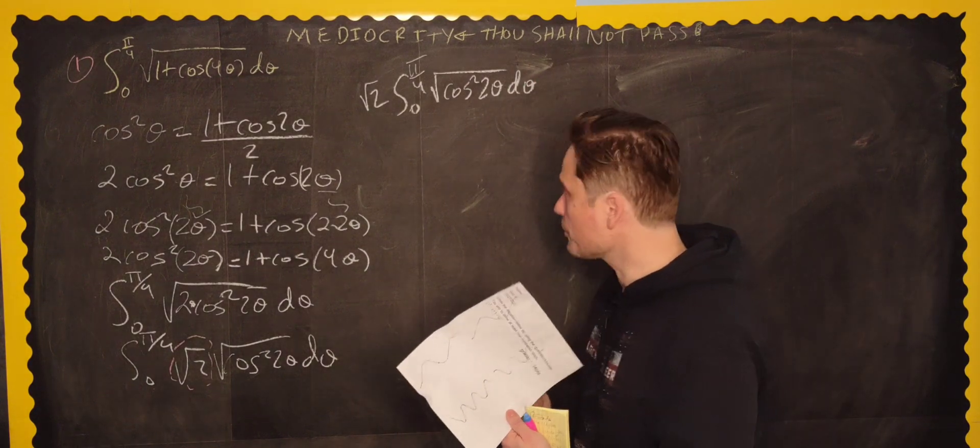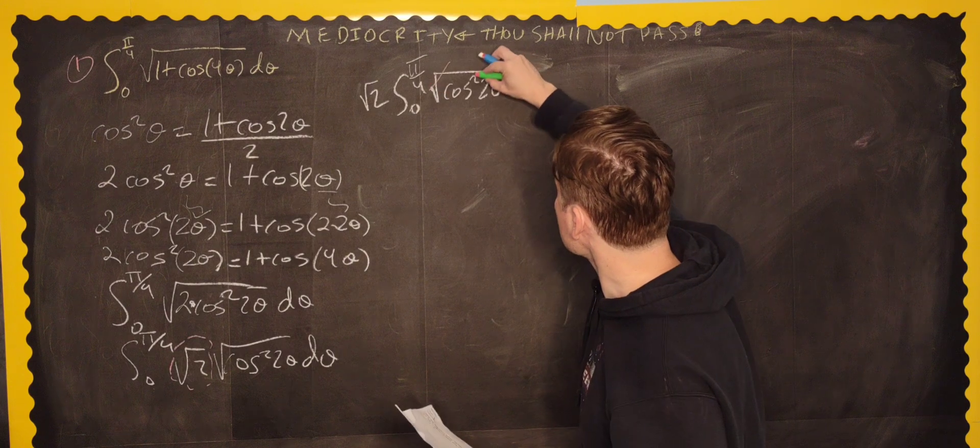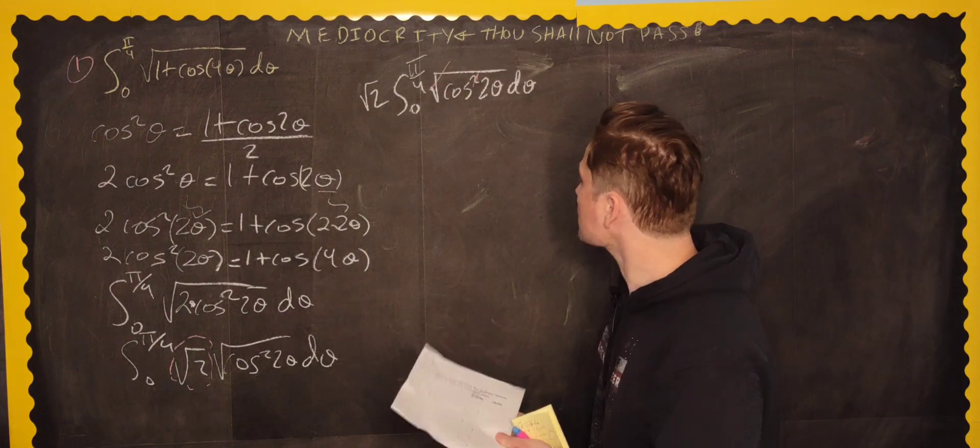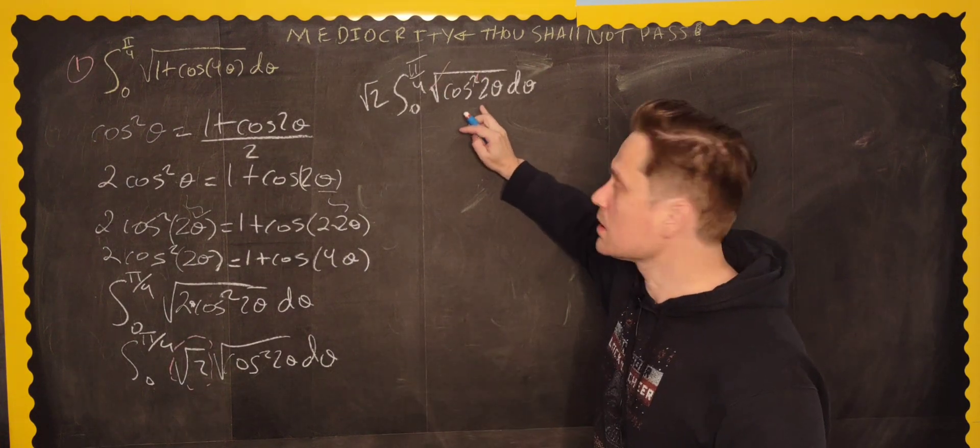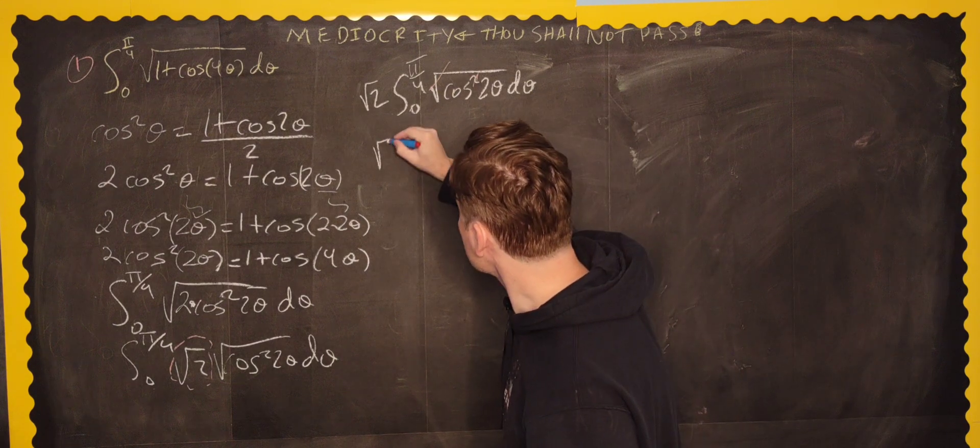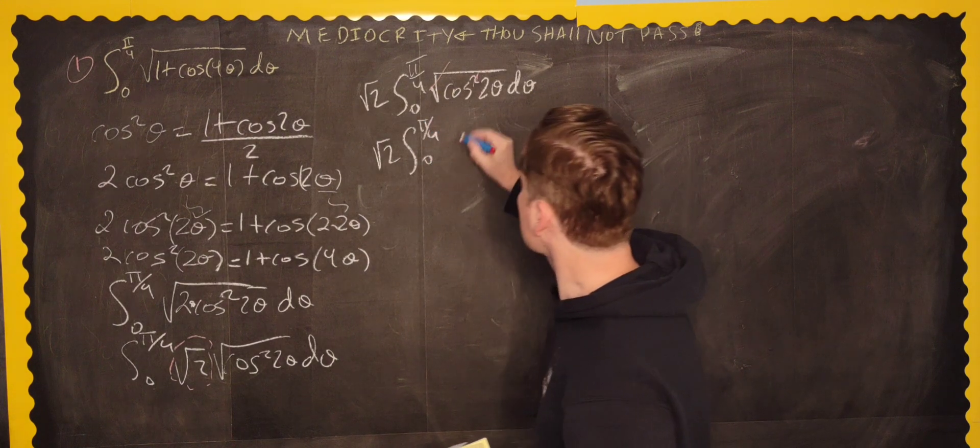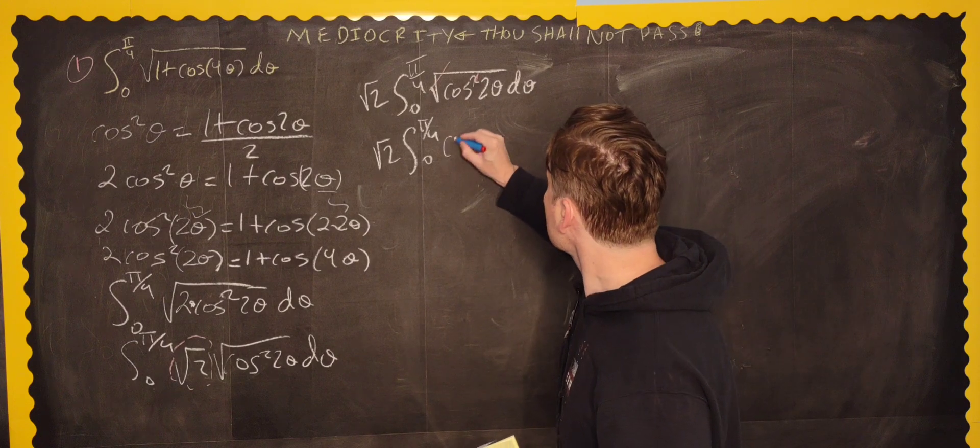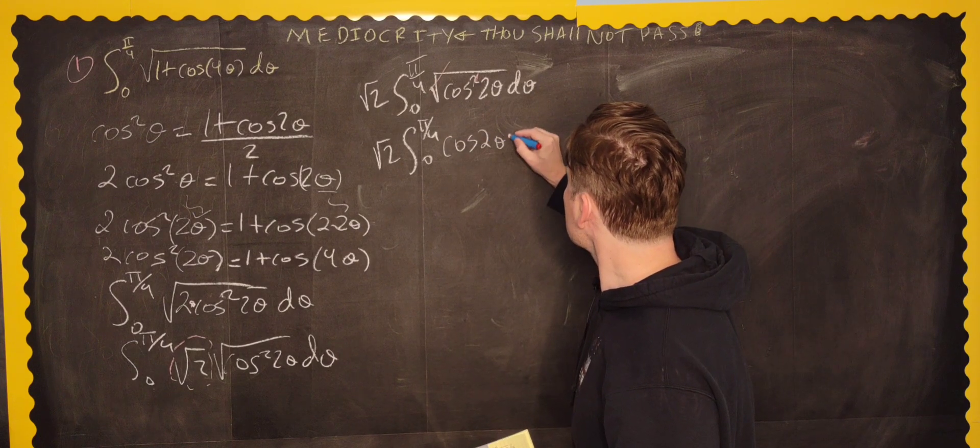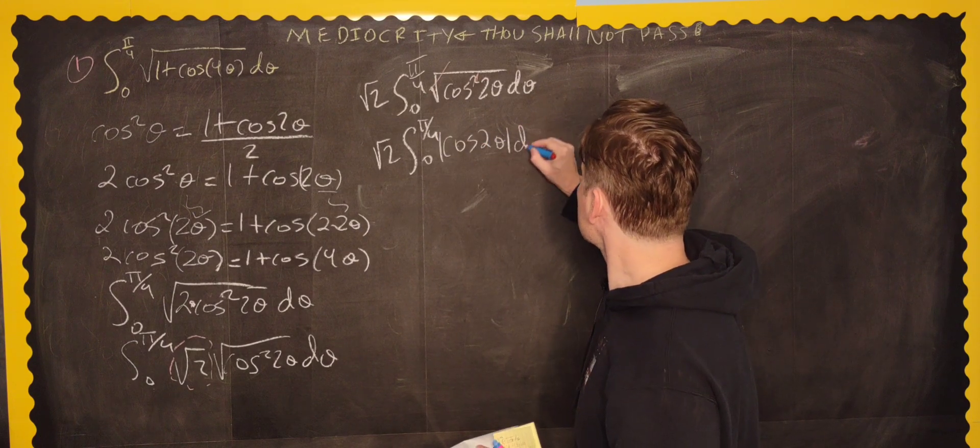And then you have just the root of cosine squared of 2 theta and then d theta like this. Now, the nice thing is here, whenever you do this, you can cancel this with this. Officially, you should do this an absolute value. So, in other words, you're just going to end up with the root of 2 and then 0 to pi over 4. And now, this becomes cosine of 2 theta like this. And it should be an absolute value with the d theta.